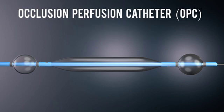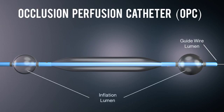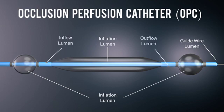It is a five-lumen catheter consisting of a guide wire lumen, an inflation lumen for the proximal and distal occlusion balloons, an inflation lumen for the space-occupying balloon, an inflow lumen, and an outflow lumen.